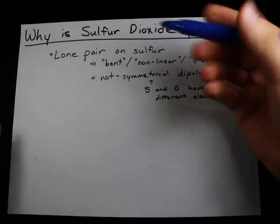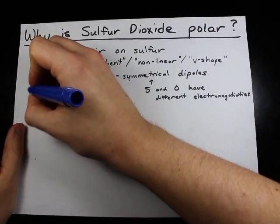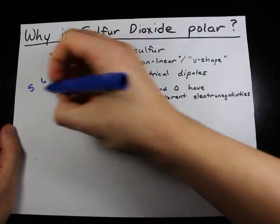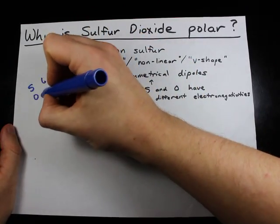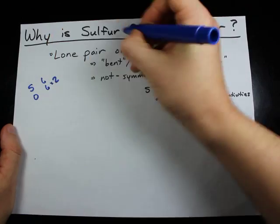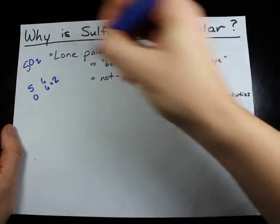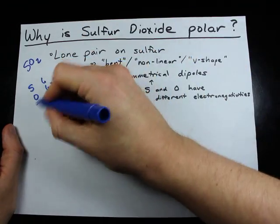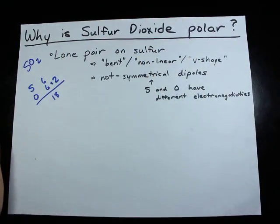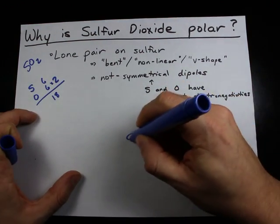Let's draw the Lewis structure for sulfur dioxide. Sulfur brings six valence electrons with it, and oxygen — there are two of them in sulfur dioxide, SO₂ — also brings six each, which is 18 valence electrons total to be distributed throughout the molecule.